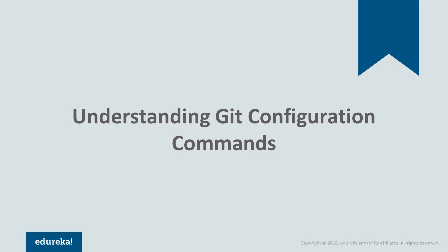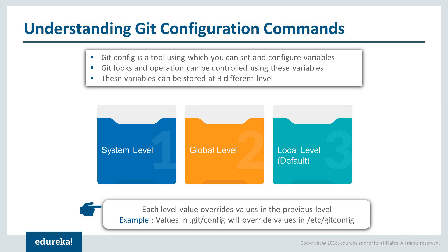The git config command is used to set and configure variables that control Git's look and different operations. Variables are stored at three different levels: system, global, and local. The order of priority is local, then global, then system — Git starts at local level and bubbles up to system level, with each level's values overriding the previous level. For example, local overrides global, and global overrides system. The /etc/gitconfig is the system-level file while .git/config is the local-level file residing in the project directory.